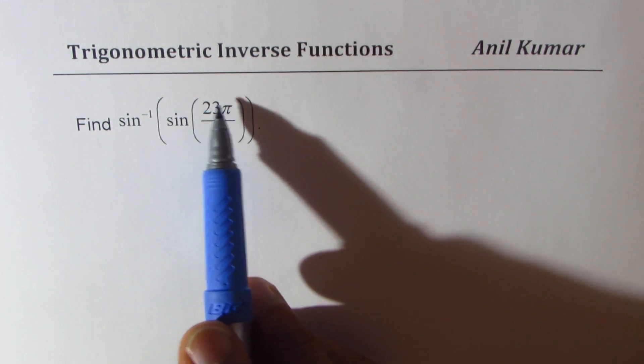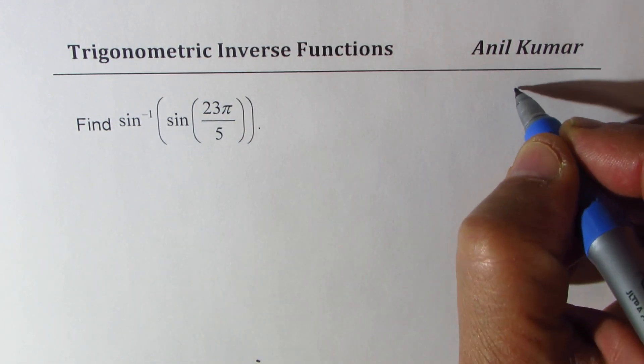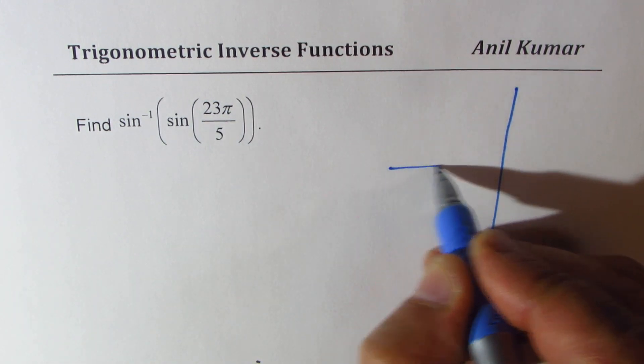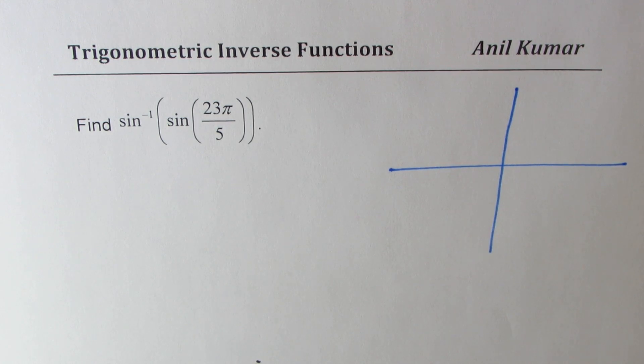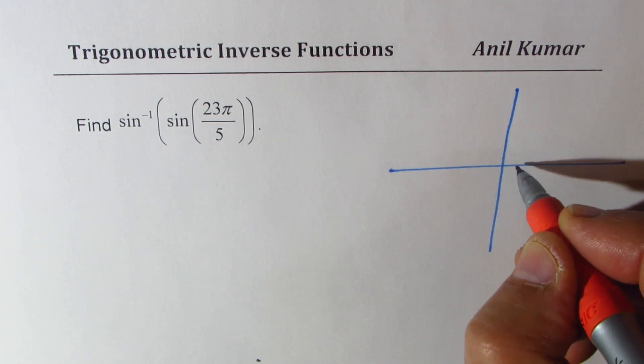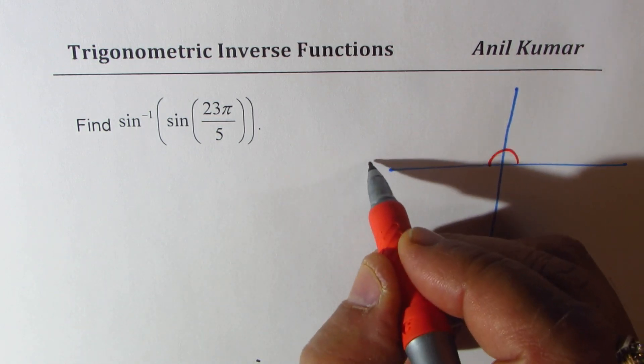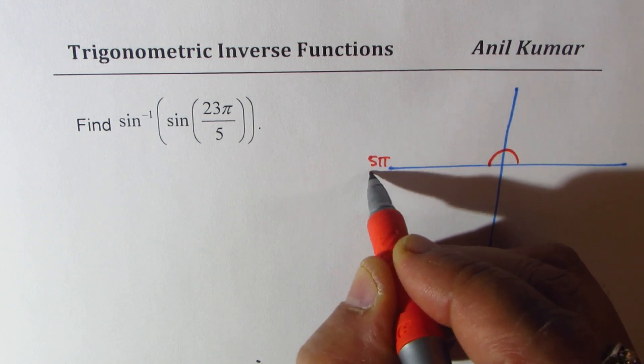Now let's see what is the inside part of it, which is sine 23π by 5. So if you look at the coordinate plane, 23π by 5 means what? So that means we have to divide this into 5 portions. So that is 5π by 5.